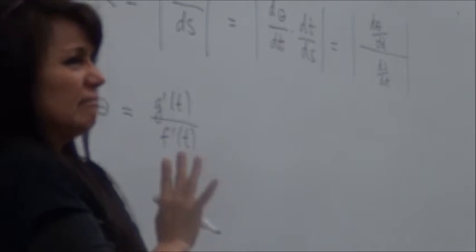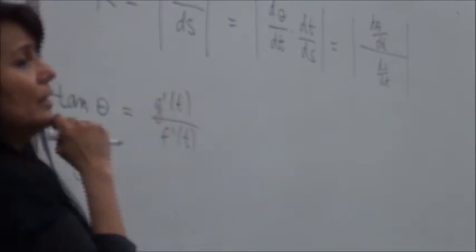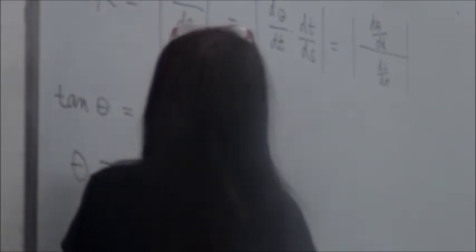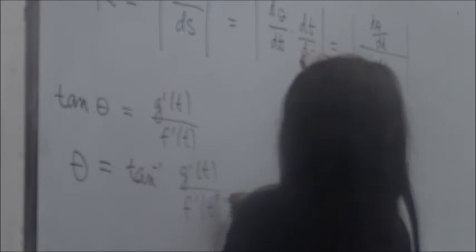Just like what we did earlier, because I don't like tangent theta, but I want theta. How can I write theta? It's tangent inverse of this, g prime of t over f prime of t.